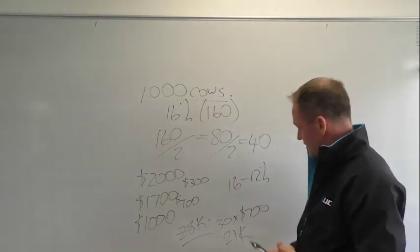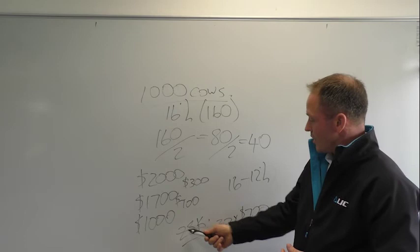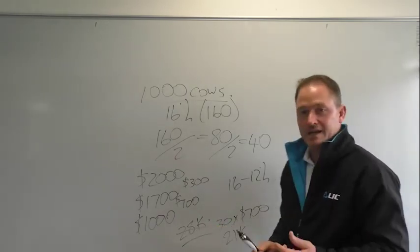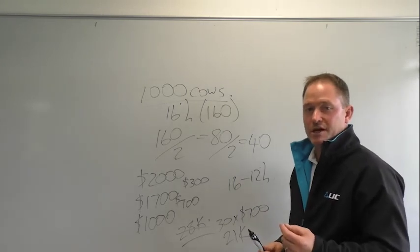Clearly, if this is a 500 cow herd, these numbers are going to look more like $14,000 and $10,500. But you can do the numbers according to your herd size.